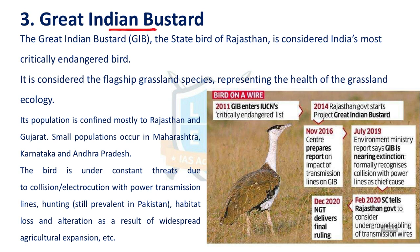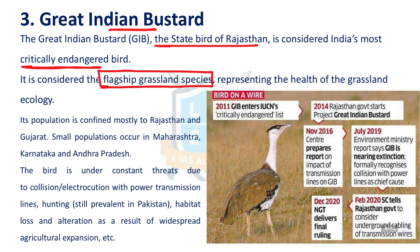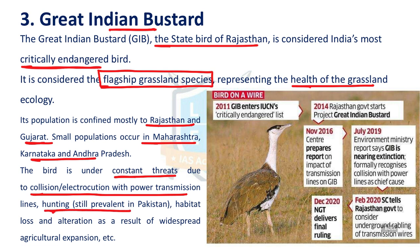The next issue is the Great Indian Bustard, the state bird of Rajasthan and India's most critically endangered bird species. The Supreme Court ordered the state of Rajasthan to install fly diverters on power transmission lines. It is the flagship grassland species, also known as an indicator species for the health of grassland ecology. Its population is mostly confined to Rajasthan and Gujarat, with small proportions in Maharashtra, Karnataka, and Andhra Pradesh. Threats include collision and electrocution with power transmission lines, hunting, habitat loss, and alteration of land for agricultural purposes.